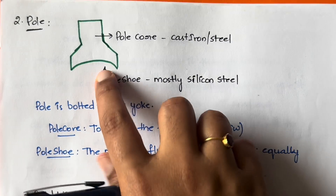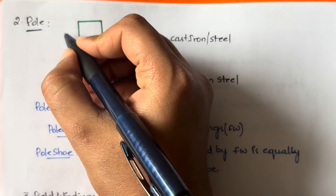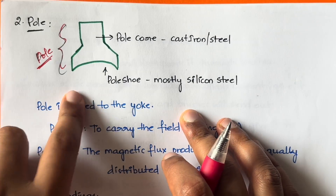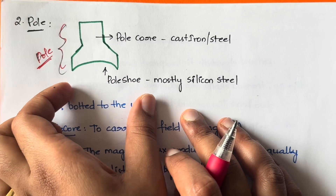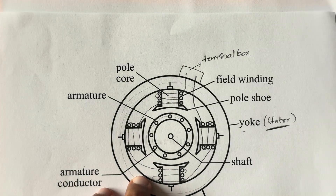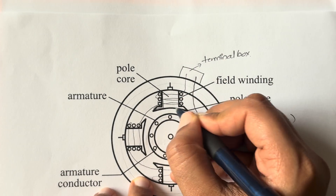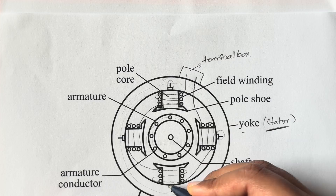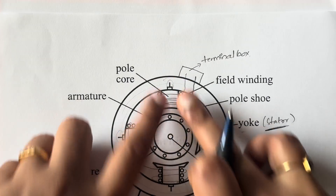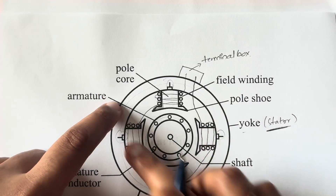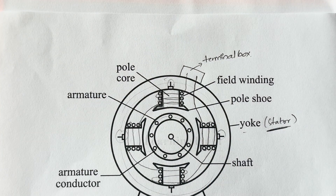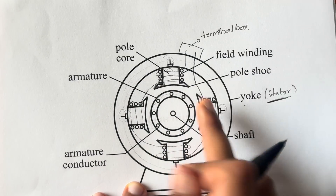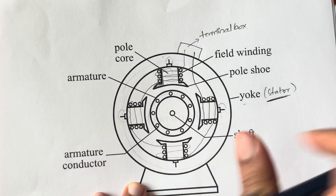The next part is the pole. The total pole structure consists of two parts: the pole core and the pole shoe — this bottom part is called the pole shoe. In the diagram you can see the pole is fixed to the yoke using screws. We have four poles and four screws attached. The middle part is called the pole core and the bottom part is called the pole shoe.